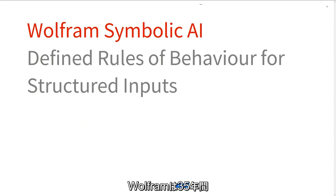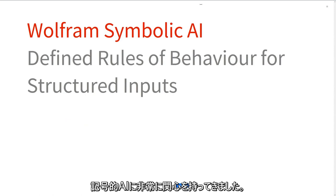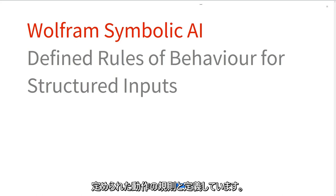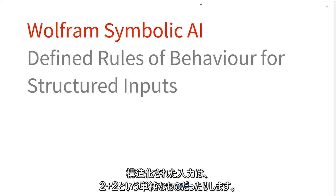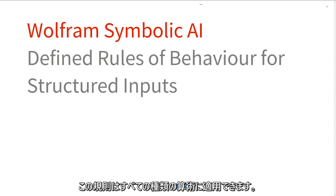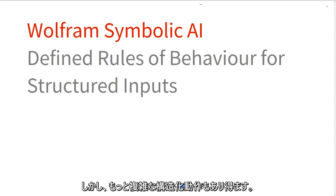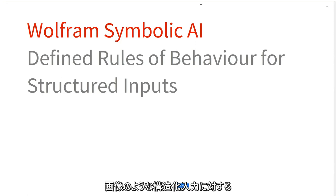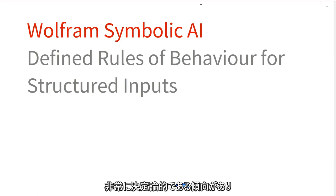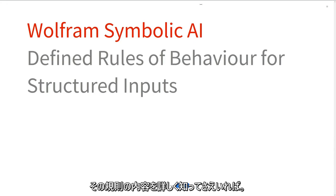Wolfram for 35 years, and me personally for 32 of those, have been very much concerned with symbolic AI. I define that as having defined rules of behavior for structured inputs. Structured inputs might be something simple like two plus two, where we have an expression and the rules of behavior — in that case, addition — and there's no guesswork. We know exactly what the rules are. Those rules scale up to all kinds of arithmetic, but can also apply to more complex structured inputs like an image. These defined rules of behavior tend to be quite deterministic and predictable.